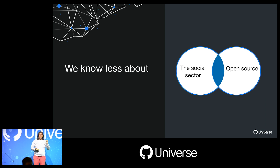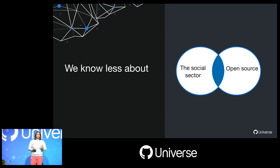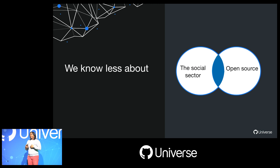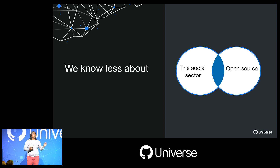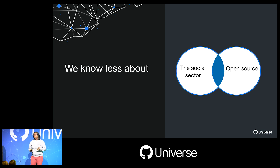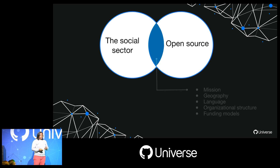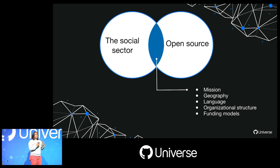But what we know less about is this intersection: how does the social sector actually interact with open source? What can we actually do to improve that ecosystem? Instead of making one-off guesses, as social scientists we decided to take a more systematic approach.